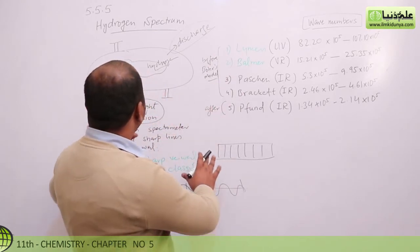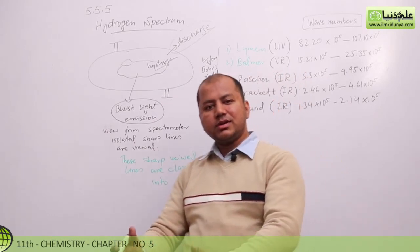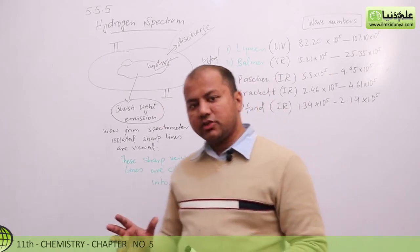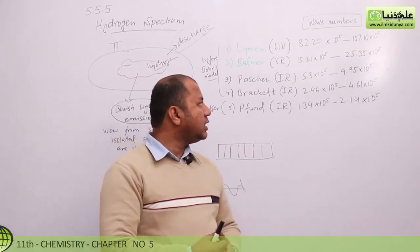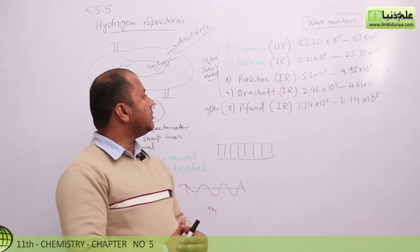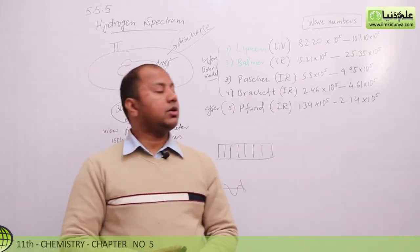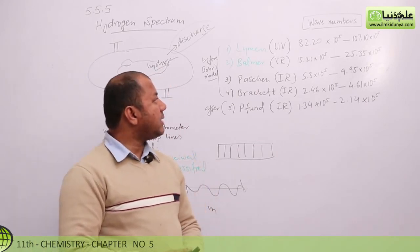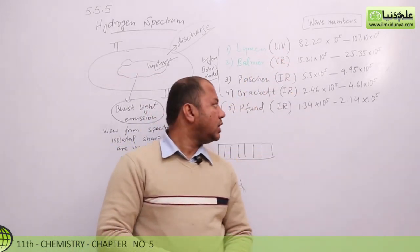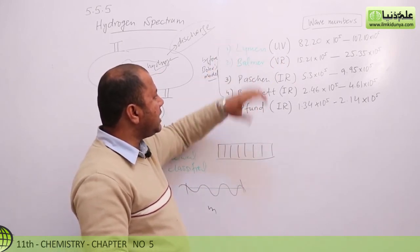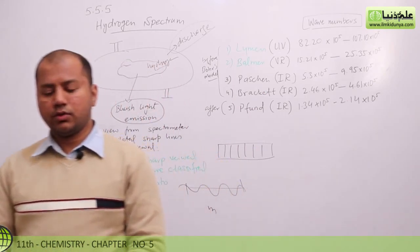So that's how this hydrogen spectrum has been explained by a lot of scientists. Hydrogen spectrum gives you a bluish light and that bluish light can be seen with the spectrograph or spectrometer. You can draw these kinds of graphs with the help of spectrometer. Lehman, Balmer, Pastran, Bracket, and Pfund have studied them in ultraviolet, visible, and infrared regions. In our focus in the next lecture, Lehman series and Balmer series will be covered. I really wish you will understand this topic. Thank you, thank you.